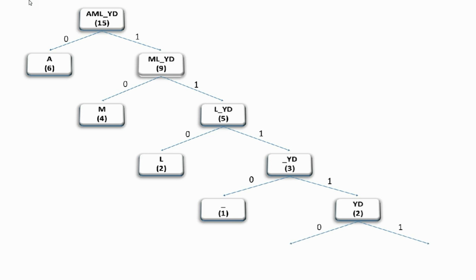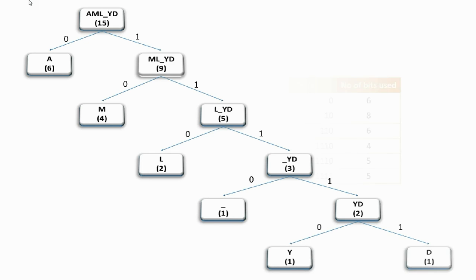Finally, this is split into branch 0 and branch 1, with branch 0 containing character Y which has one count and branch 1 containing character D which also has one count. Here is the summary of the tree structure.